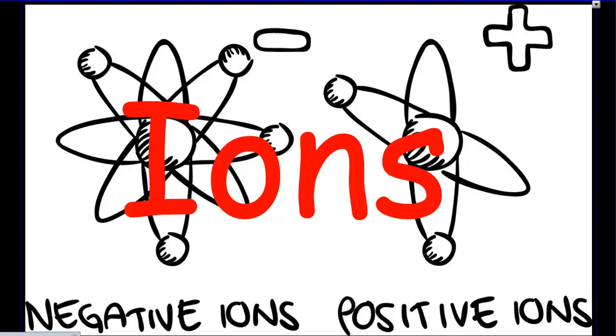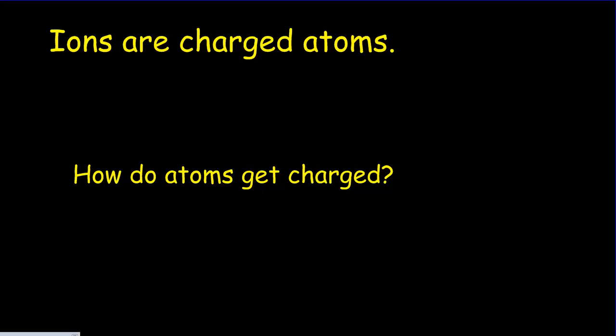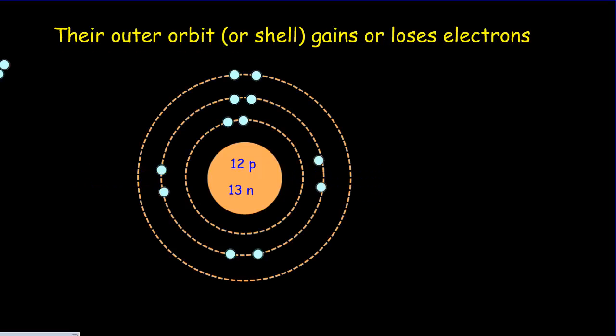Today we want to talk about ions. Ions are simply charged atoms. Now how do atoms go about getting charged? It comes down to their outer shell electrons. These outer shell electrons can be lost or can be gained.